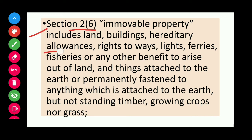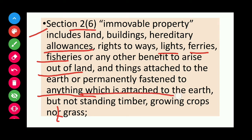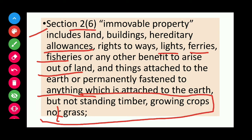Immovable property includes hereditary allowances, right to ways, lights, ferries, fisheries, or any other benefit arising out of land and things attached to the earth — but not standing timber, growing crops, or grass. These three — standing timber, growing crops, and grass — do not come under immovable property.